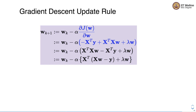Let us derive the gradient descent update rule for ridge regression. The new value of the weight vector is set to the old value of the weight vector minus alpha — alpha is the learning rate — times x-transpose, where x is the feature matrix, into x w minus y. Here x w is the predicted output vector and y is the actual label vector. And we add the partial derivative of the penalty term, which is lambda times w. We simply add this lambda w as an additional term to the gradient descent update rule of the linear regression model.